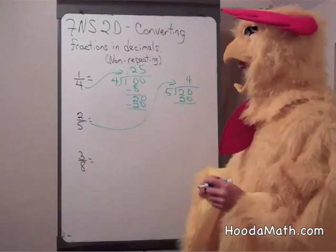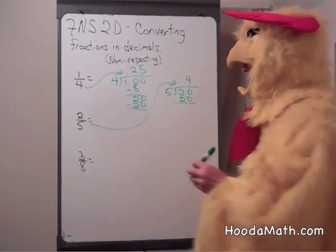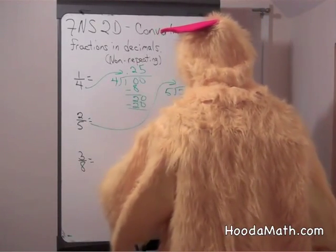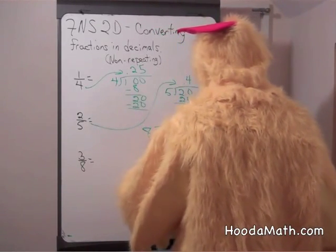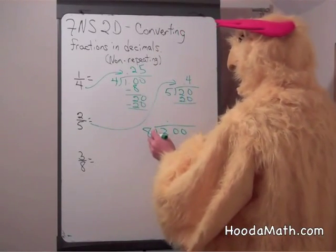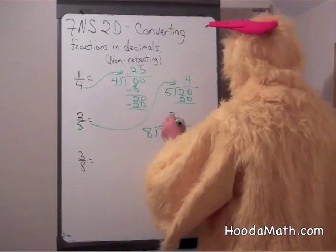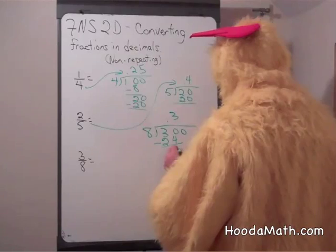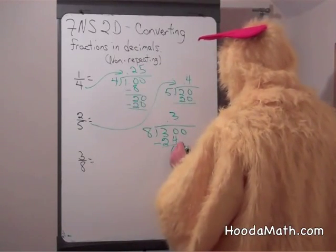The fraction can be converted. In our final example, three-eighths. Eight into three. Eight into thirty goes three times. Three times eight is twenty-four. Subtract. Bring down the zero.